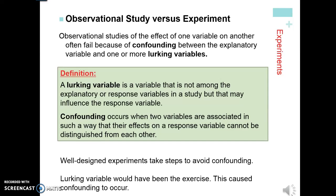What well-designed experiments try to do is identify potential lurking variables and try to account for them. In this case, the lurking variable could have been exercise or diet, which caused confounding — meaning we don't know if it was the exercise that caused the decreased amount of heart attacks or if it was actually the drug.